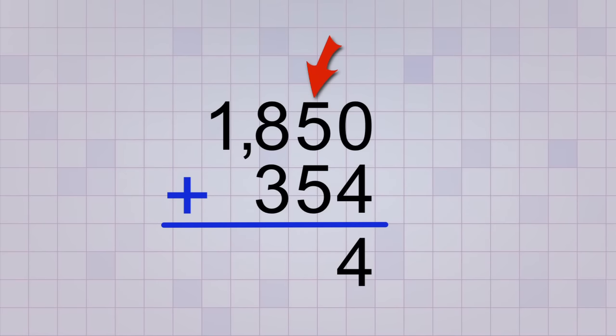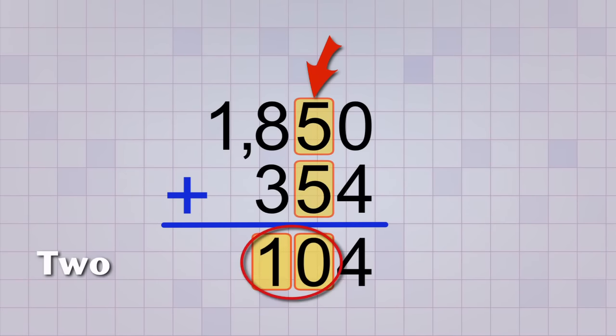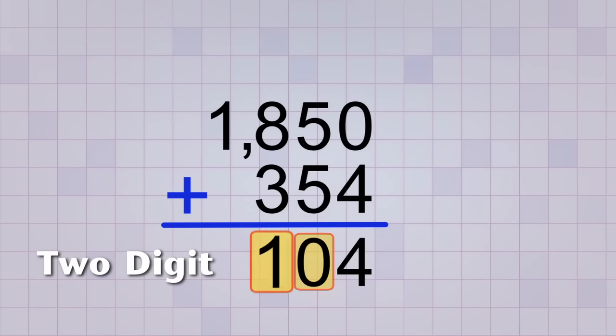If you add the digits in the tens place, 5 plus 5, you get 10. But 10 is a two-digit number. So we would need to use two digits in our answer to write it. But we can't leave a 1 in the hundreds place of our answer because we're going to need that space when we add the hundreds place digits. That 1 is going to be in the way. So what do we do?